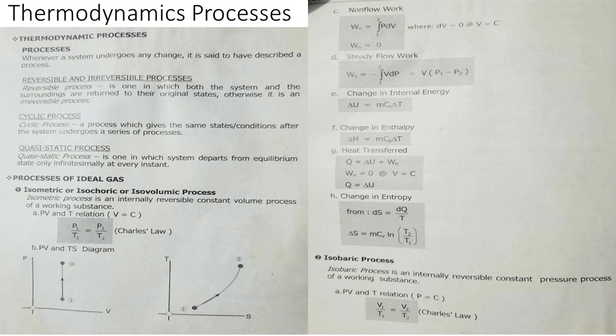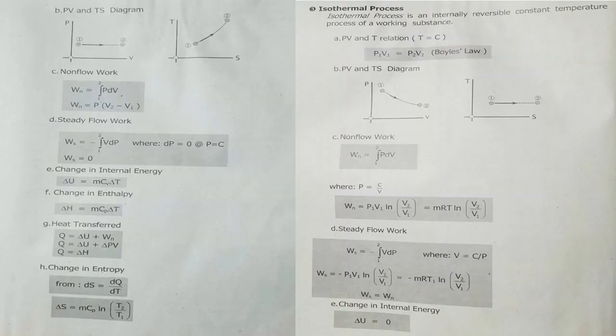Isobaric is constant pressure. The relationship of P, V, and T where P equals constant gives V1 over T1 equals V2 over T2 from Charles' Law. Steady flow work is the negative integration from 1 to 2 of V dP, where V equals C over P. Integrating gives steady flow work equal to negative P1V1 times ln(V2 over V1), or negative MRT1 times ln(V2 over V1), depending on the given.